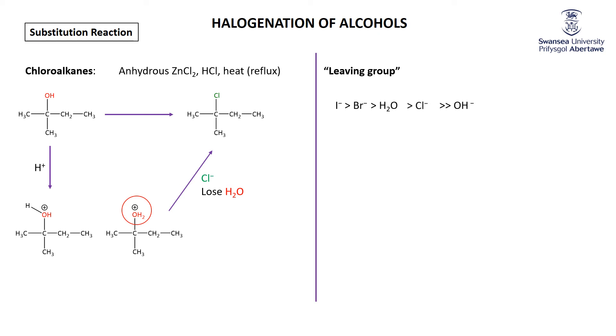Substitution reactions associated with reacting alcohols with HX, in this case HCl: first, you protonate the alcohol so you've turned a bad leaving group into a good leaving group. How that leaving group leaves depends on whether you have a primary, secondary, or tertiary alcohol.